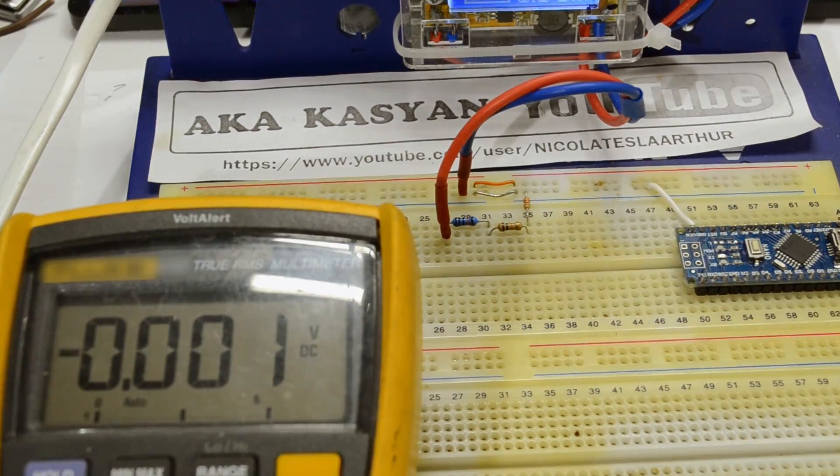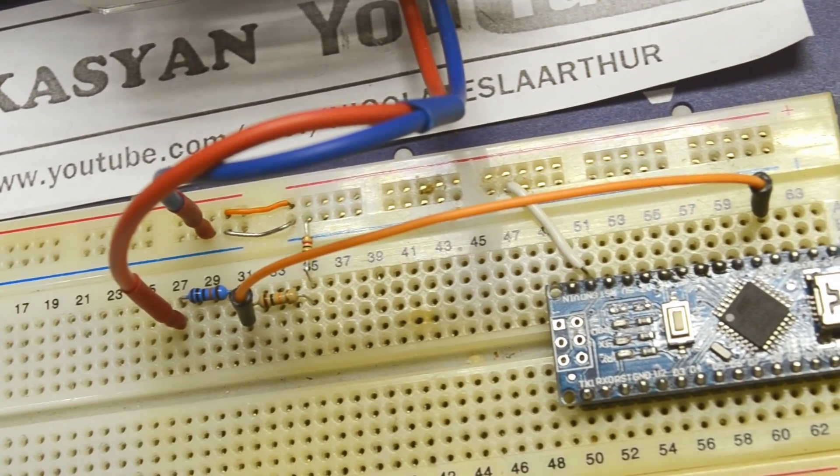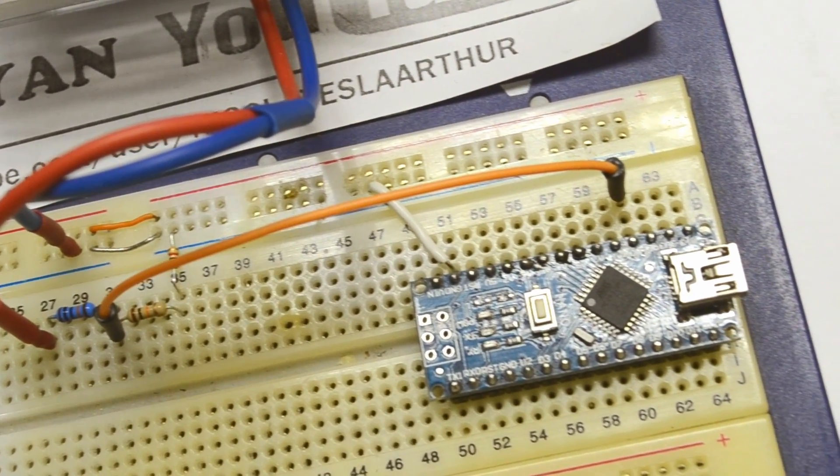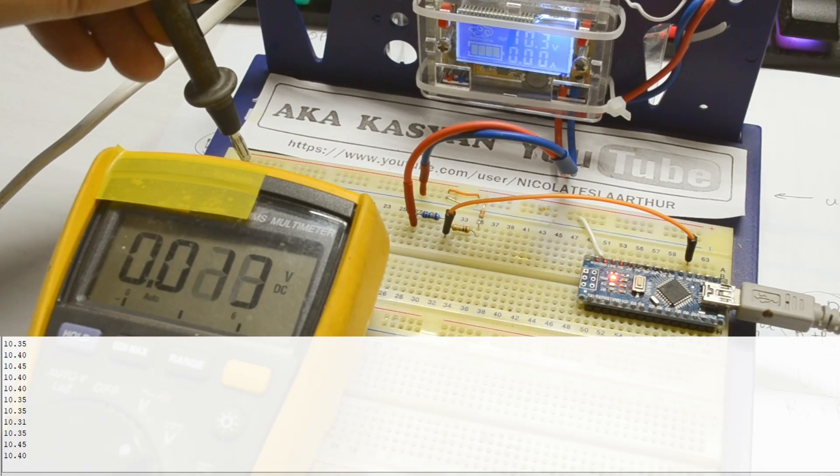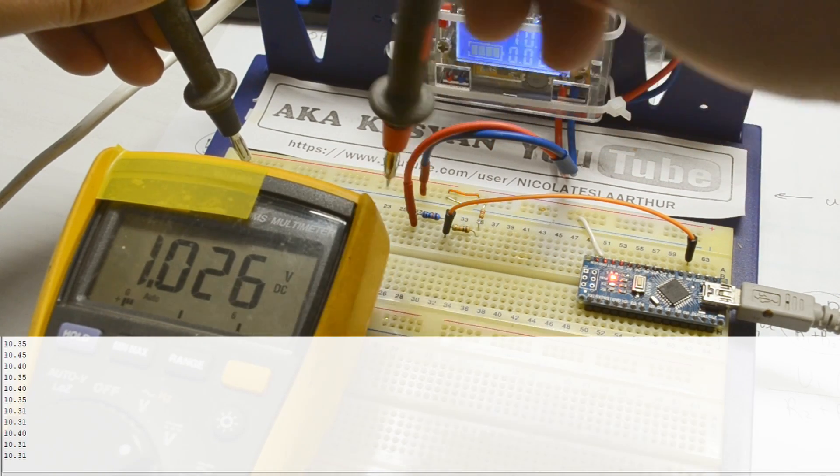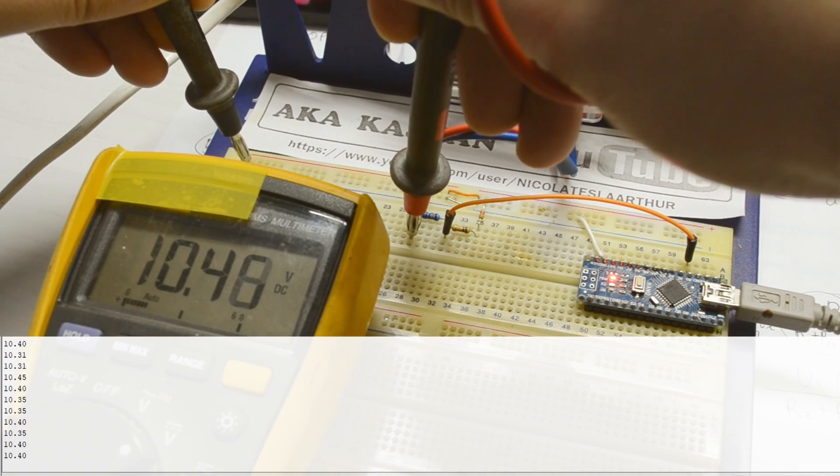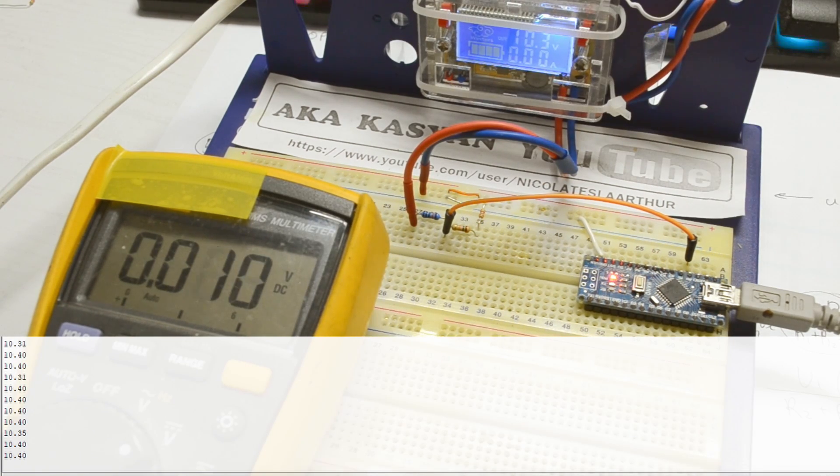For example, we connect it to the first point and supply about 10 to 20 volts. Of course, we must add to the program the recount of the measured value to the original. Knowing the exact resistance values is easy. Great! It works!